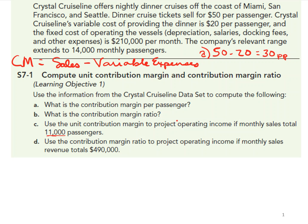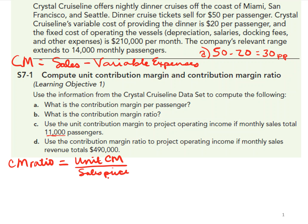Part B asks for the contribution margin ratio. The contribution margin ratio equals the unit contribution margin divided by the sales price per unit. Since the unit contribution margin per passenger is $30 and the sales price per passenger is $50, that gives us a 60% contribution margin ratio.